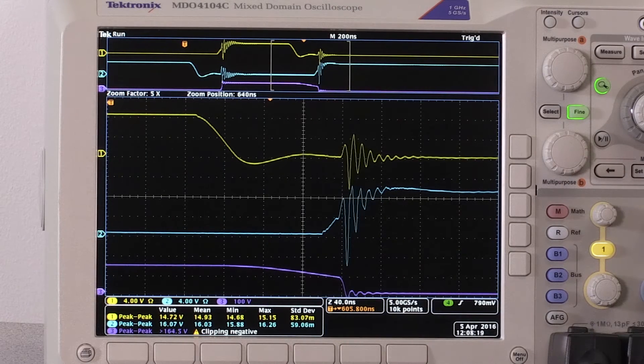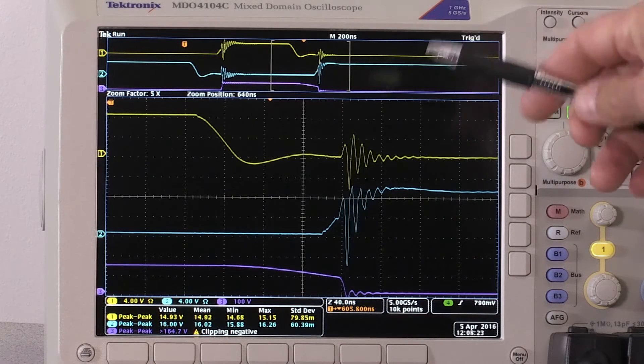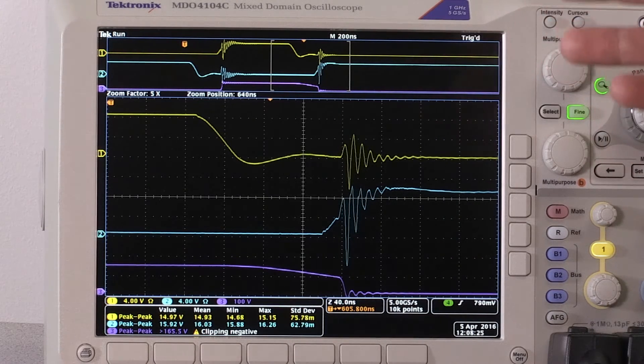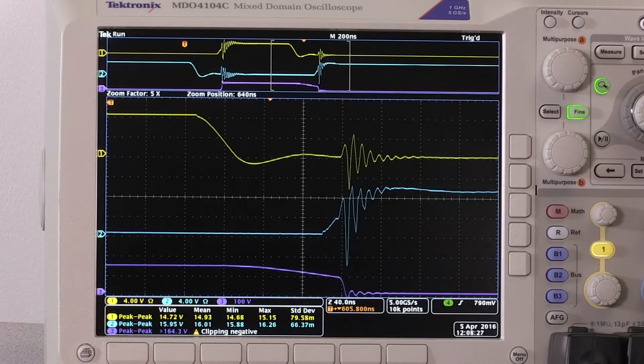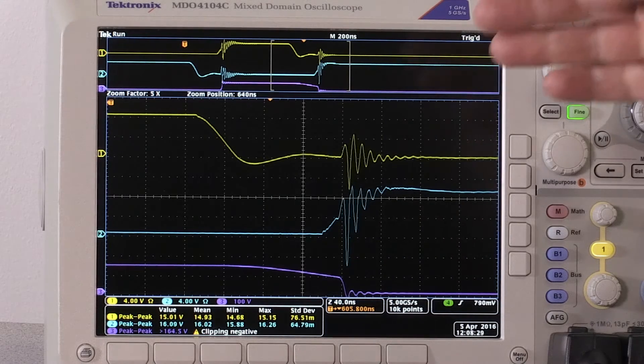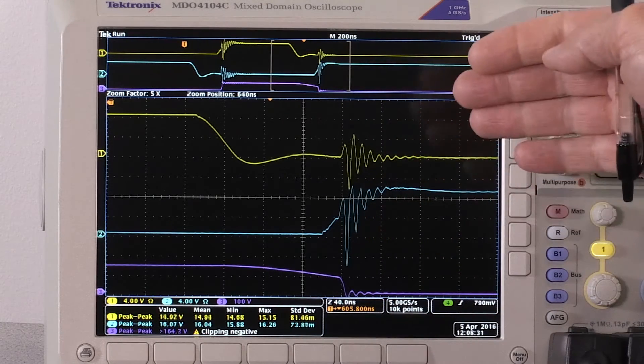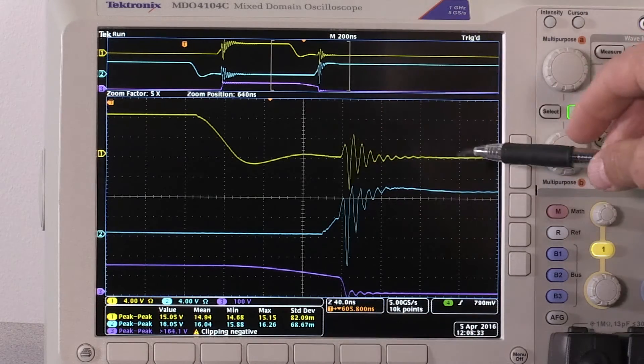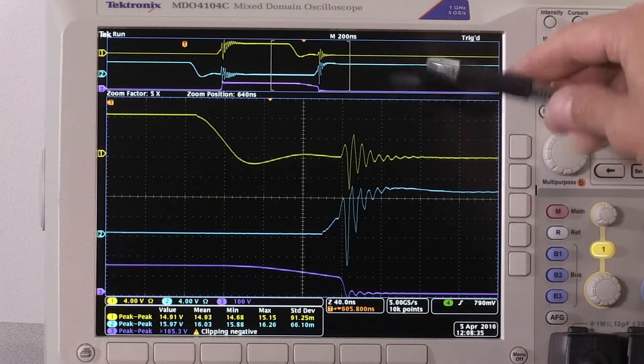And this is the kind of measurement that is impossible to make today because of the inadequate common mode rejection of most of the devices that are out there. Because we have a million to one common mode rejection, we can be confident that these are the true differential measurements that we're looking at.